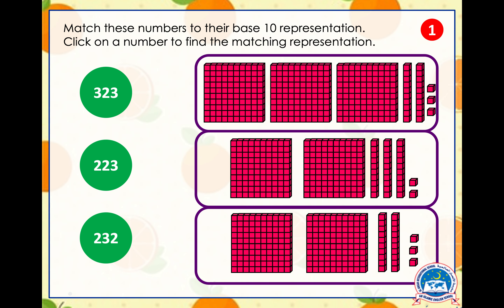Let's look at this — we need to match these numbers to the correct drawings. Here we have 323, 223, and 232. If you've guessed that 323 goes to this block over here, well done! Why? Because we have one hundred, two hundred, three hundred, then ten, twenty — three hundred and twenty — twenty-one, twenty-two, and three hundred and twenty-three.